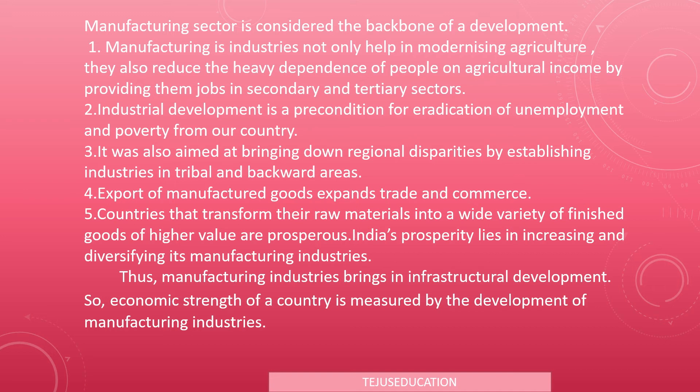First point: manufacturing industries not only help in modernizing agriculture, they also reduce the heavy dependence of people on agricultural income by providing jobs in the secondary and tertiary sectors. In off-seasons, farmers can get jobs in these sectors. Industrial development is a prerequisite for eradication of unemployment and poverty — more industries means more employment.